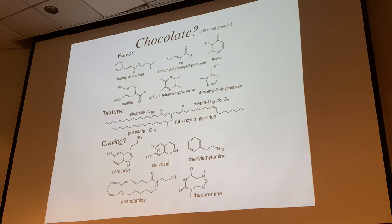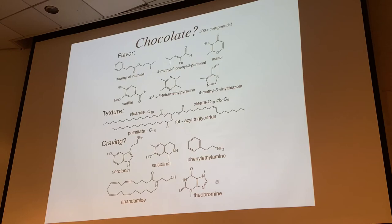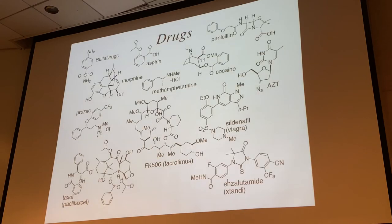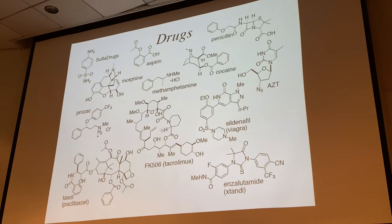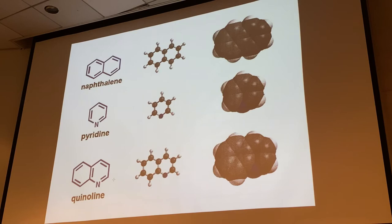Pyrazine and thiomethylimidazole are the essence of potato chip - that nutty, roasted taste. Both have aromatic structures with nitrogen and sulfur, where lone pairs on sulfur and oxygen are part of the aromaticity. The craving part of chocolate comes from serotonin, salsolinol, phenethylamine, and theobromine - one methyl group away from caffeine. 'Theobromine' means 'food of the gods' in Greek, which is what the Aztecs called chocolate. Aromatic structures also appear throughout drugs: sulfa drugs, aspirin, penicillin, cocaine, AZT.